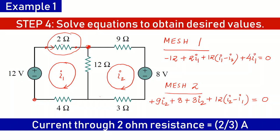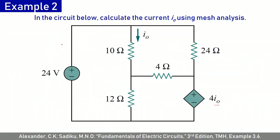In example 2, we have a circuit with both dependent and independent sources. We see that one source is a current-dependent voltage source — it is dependent on a current i0 which is flowing through the 10-ohm resistance.